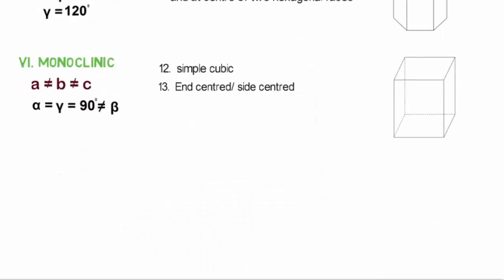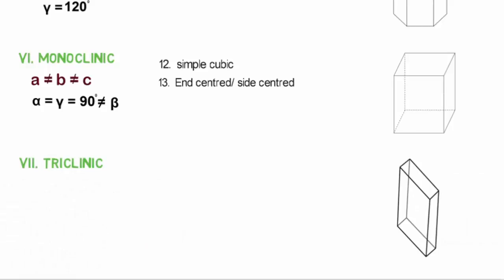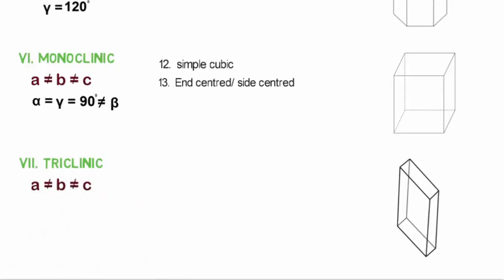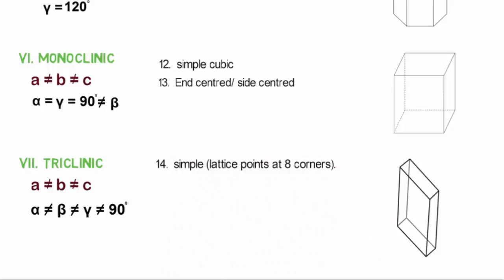The last one is triclinic. In triclinic, none of A, B and C are equal to one another, and all the angles alpha, beta and gamma have different values and none of them is equal to 90 degrees. The triclinic crystal system can be arranged in a simple cubic lattice structure.